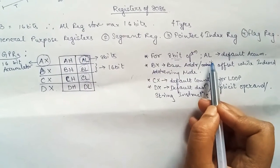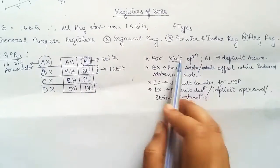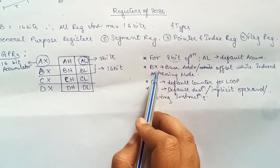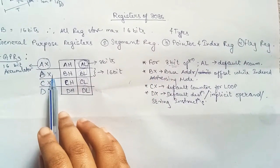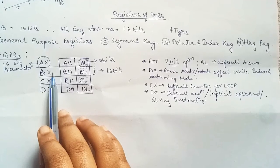Then we have BX. BX will store the offset or the base address when we do index addressing modes. We will see later. So BX stores the base addresses.